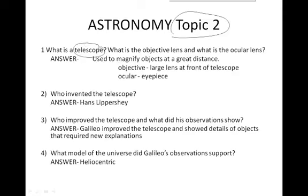First, I want you to describe what a telescope is. It's a device used to magnify objects at great distances. They want you to be able to explain objective and ocular lens. The objective lens is the large lens, usually at the front of the telescope, and the ocular is the eyepiece.